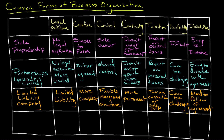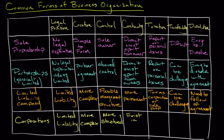Last but certainly not least, we have corporations. Corporations are the most common form, especially for larger businesses. A corporation establishes a separate legal entity apart from the owners, which creates limited liability protection — your personal assets are safe even if things don't go well with the business. Creating a corporation involves quite a bit of paperwork, including filing articles of incorporation with the state and adopting bylaws. The control of a corporation is typically structured through shareholders, directors, and corporate officers.